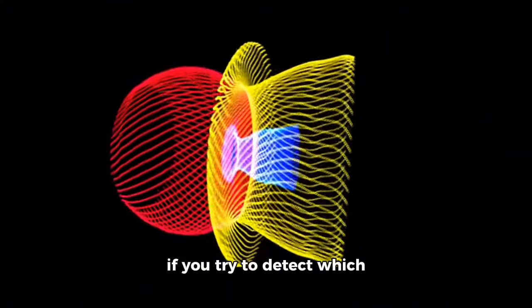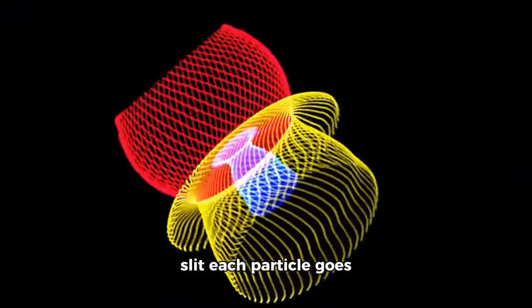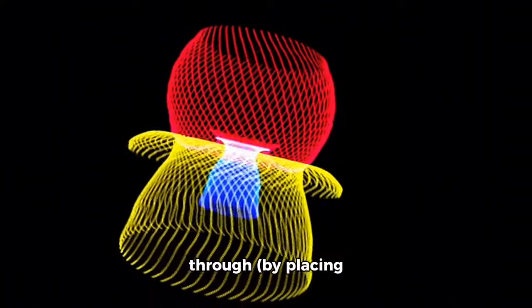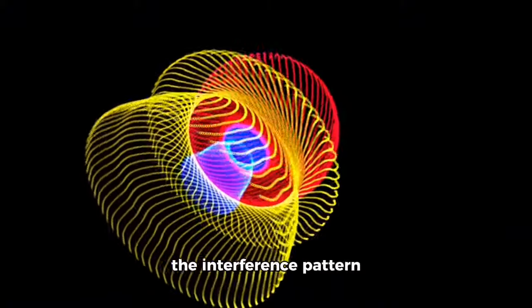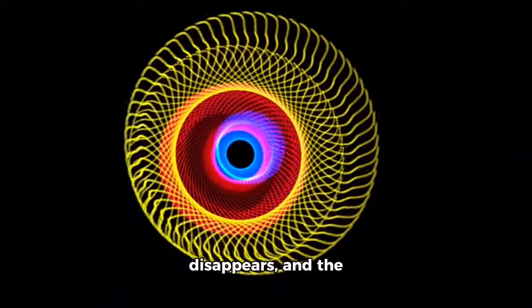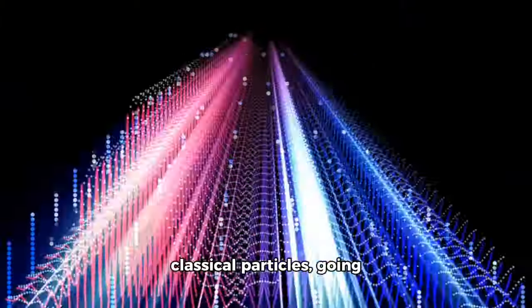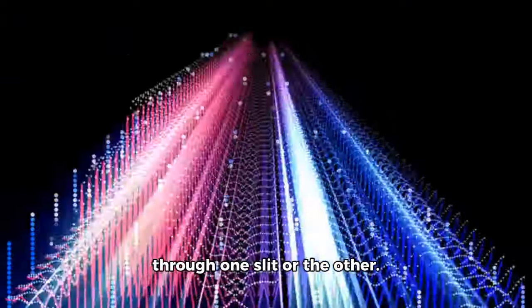Even more astonishingly, if you try to detect which slit each particle goes through by placing detectors near the slits, the interference pattern disappears, and the particles behave as classical particles going through one slit or the other.